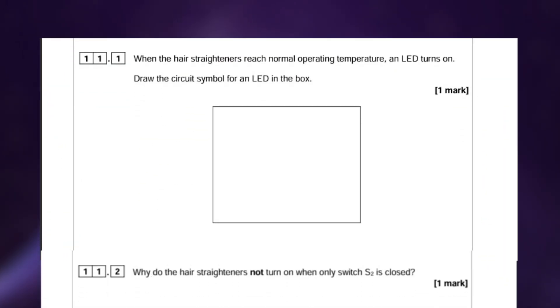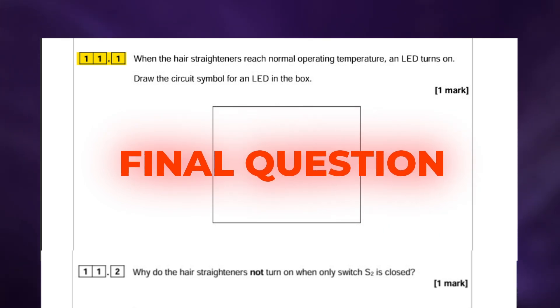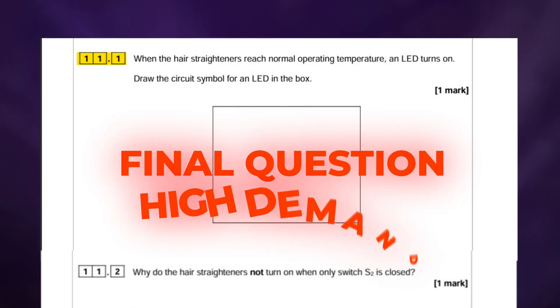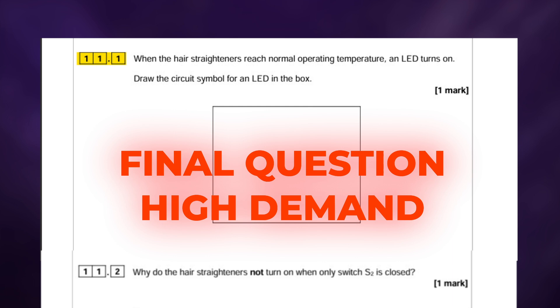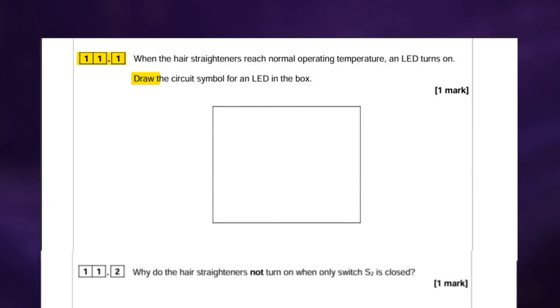And the next question that was poorly answered is question 11. As you can imagine this is the final question on the paper and it's directly labeled by the examiner's report as a high demand question, so we can assume that this is probably a grade 7 to 9 question. For part 1 you needed to draw the circuit symbol for an LED in the box and this is the symbol that you needed to draw.